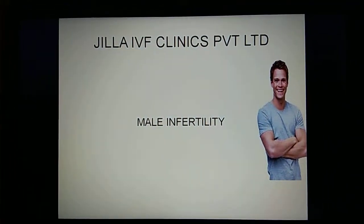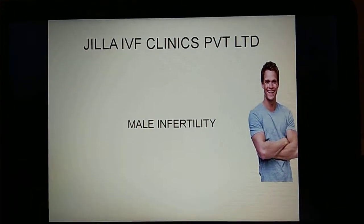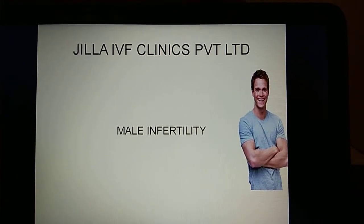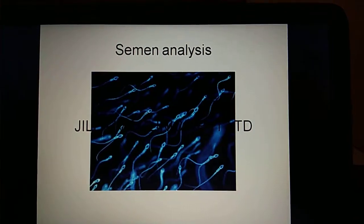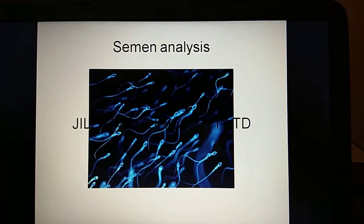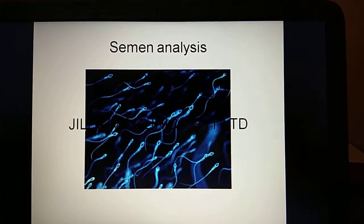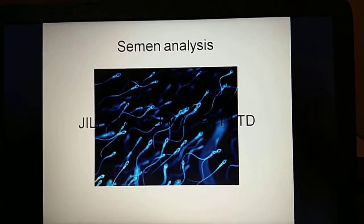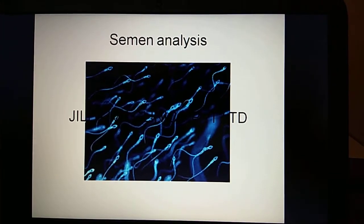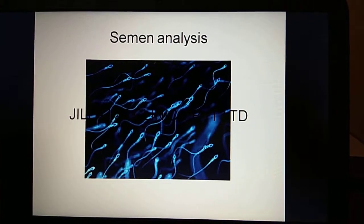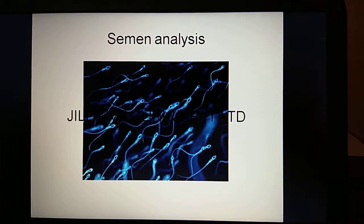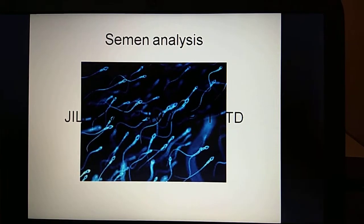40% of the times couples come with problems in the male, and the first step towards diagnosis of male infertility is a good semen analysis. The semen consists of sperms and seminal plasma. Normally, the WHO describes a normal semen analysis pattern as a count more than 15 million with good grade 4 motility sperms, and at least 4% of these sperms should have a normal morphology. There should be no bacteria and no pus cells.